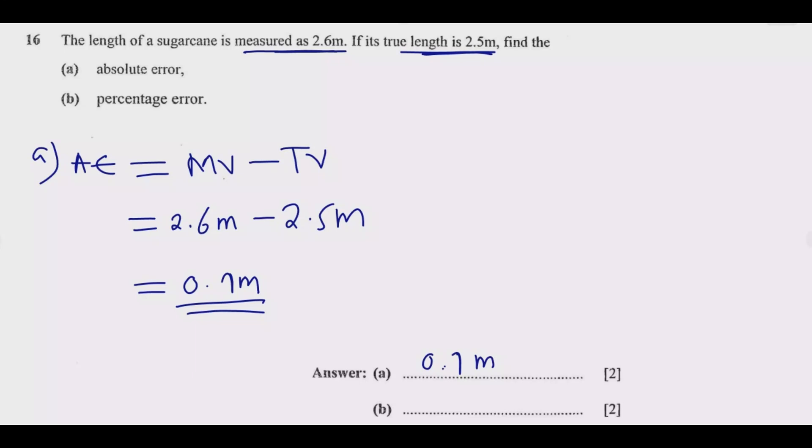Once you do that you get one mark. Now we need to find the percentage error. What's the percentage error? The percentage error is equal to the absolute error divided by the true value. So what you're saying is by what percentage is the measurement off from the true value. That's the percentage error.